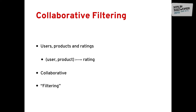Recommendation engines are a popular method to match users and products based on historical user behavior data. There are a lot of algorithms to choose from, such as content-based recommendation, collaborative filtering, and knowledge-based recommenders. Today I'll focus on collaborative filtering. In the majority of cases, we assume a unique mapping between a user, a product, and a rating. The collaborative aspect refers to using collective information from all users, and filtering is just a synonym for prediction.